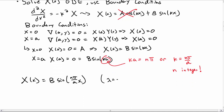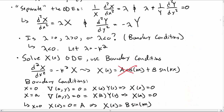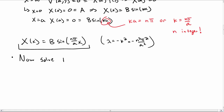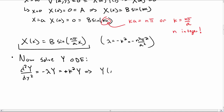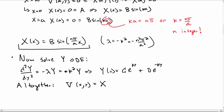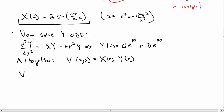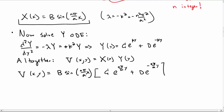That's half of our solution. For the Y ordinary differential equation, the second derivative of Y with respect to y squared equals minus lambda times Y, which is k squared times Y, giving Y(y) equals C*e^(ky) plus D*e^(-ky). All together then, v of x and y equals X(x) times Y(y), which is B sine(n*pi over a times x) times C*e^(n*pi over a times y) plus D*e^(-n*pi over a times y).